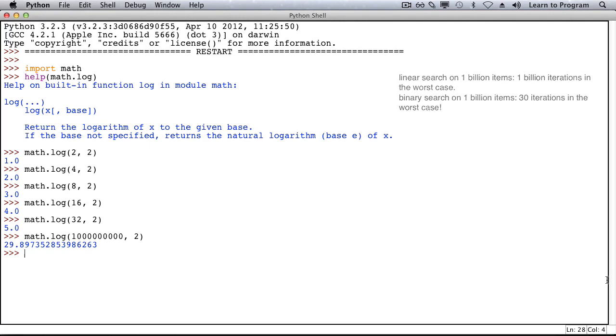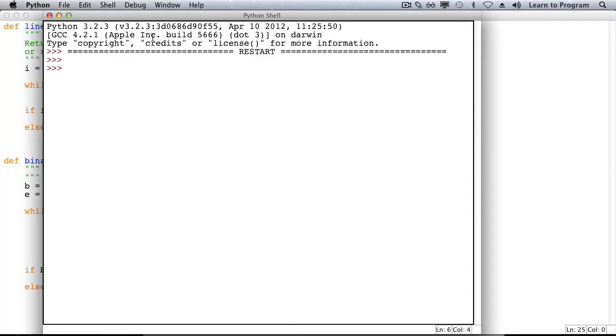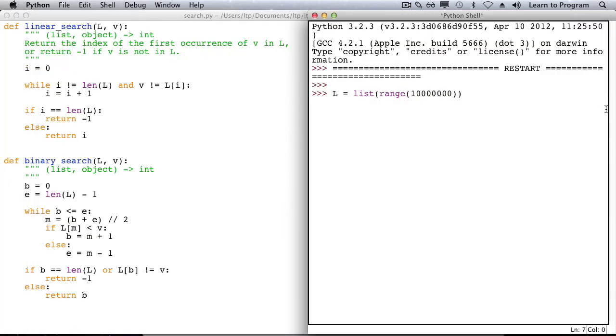Let's call binary search and linear search on a long list of numbers to see just how different these two are. We'll search for a value we know is not in the list. So with ten million items, binary search is nearly instantaneous. Linear search is noticeably slower. Here we go.